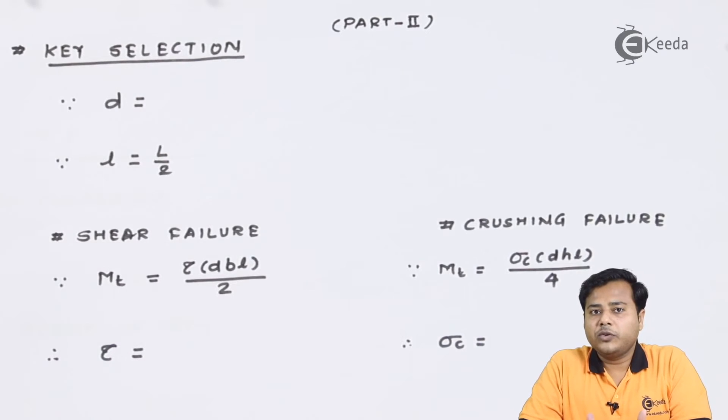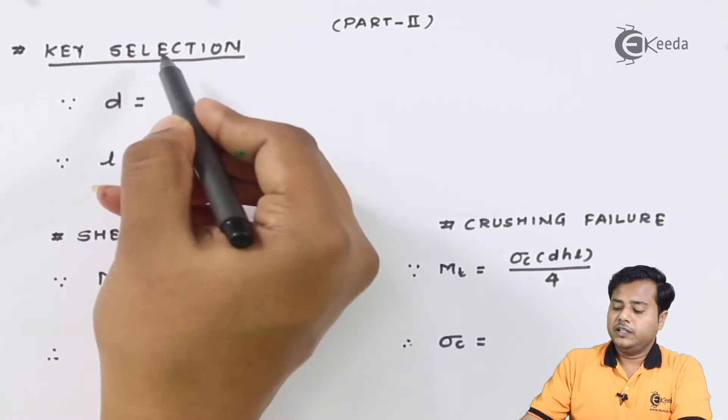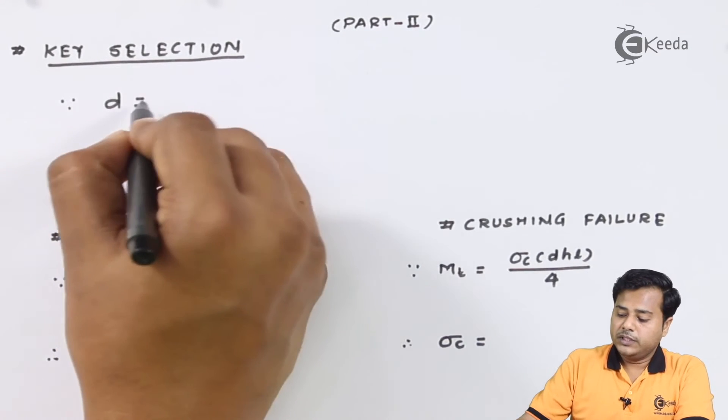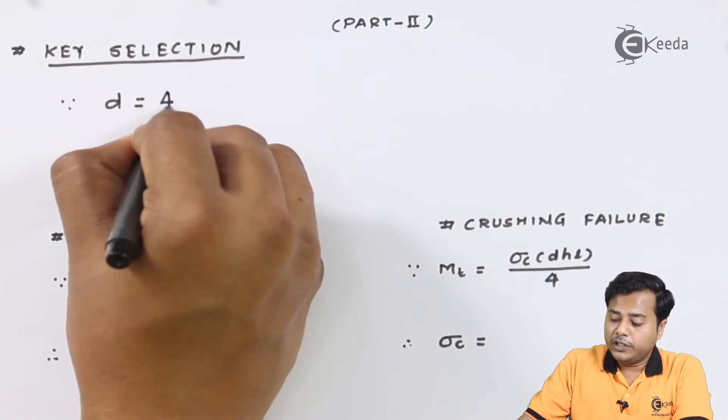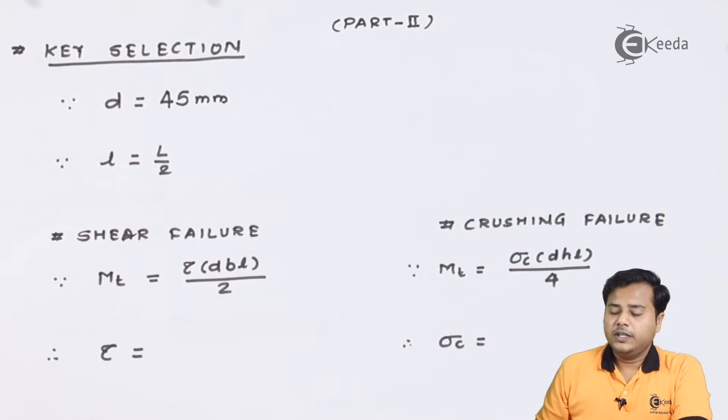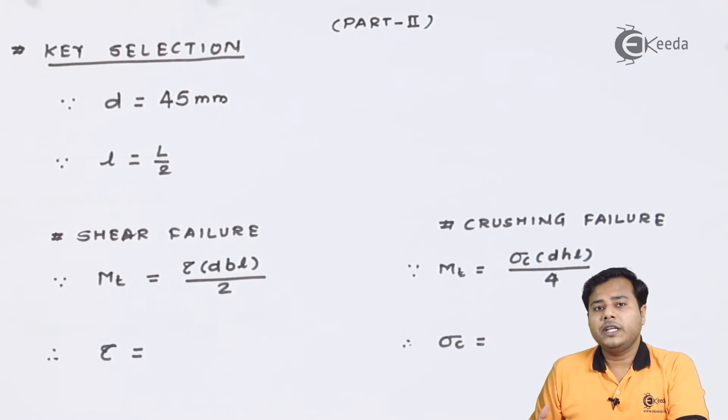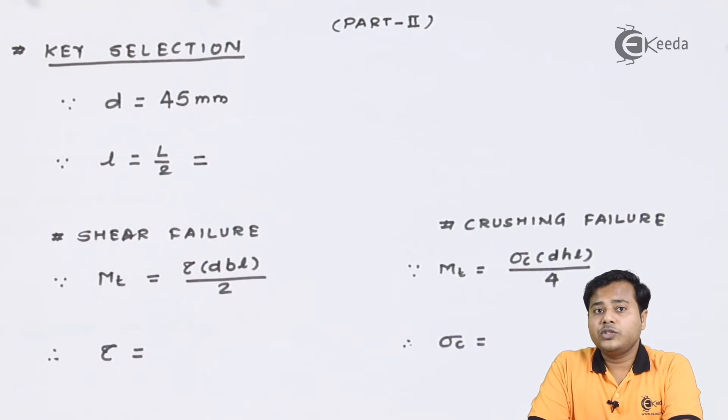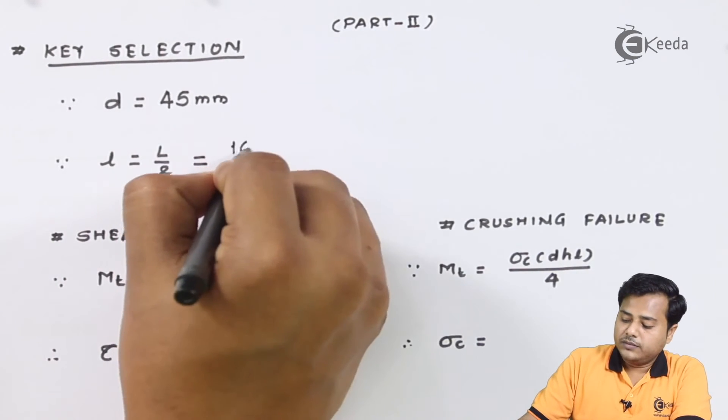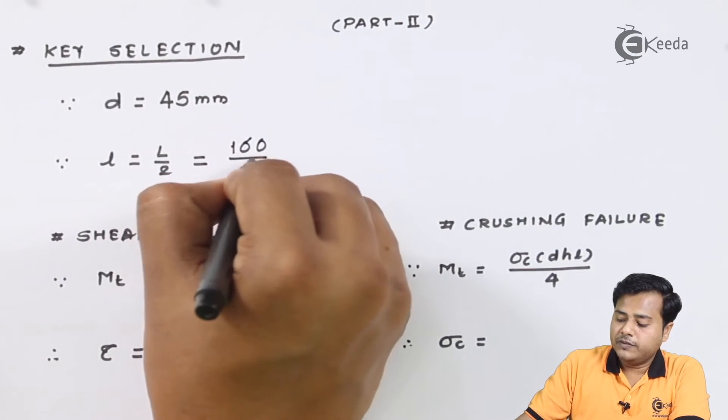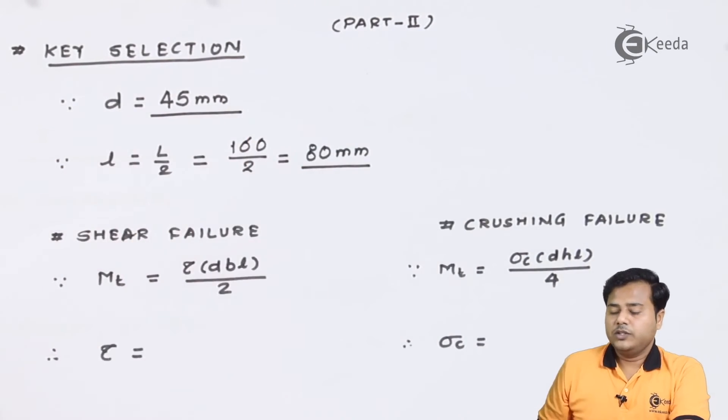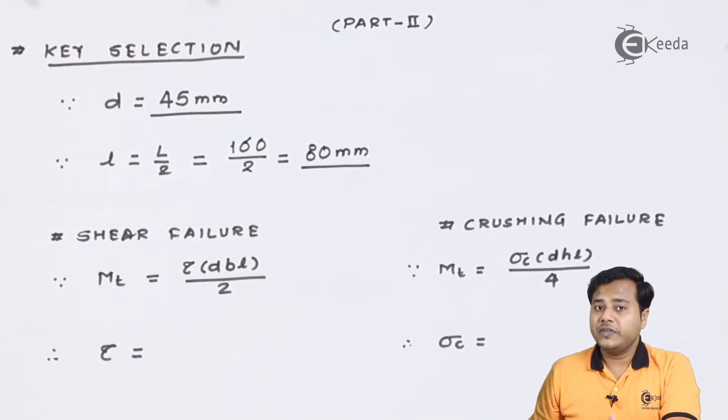The second part is key selection. We know that key is an important parameter on which the holding capacity depends. The diameter of shaft is 45 millimeter. This is standard practice that the length of key is assumed to be exactly half of the length of the shaft. The length of the shaft in our case is the length of the muff, 160 divided by 2, which comes out to be 80 millimeter.